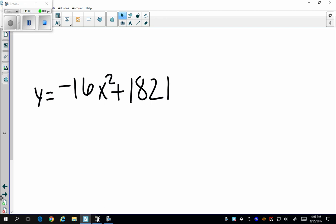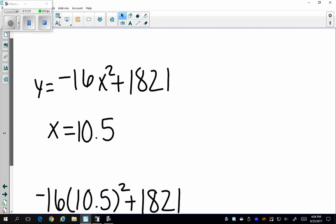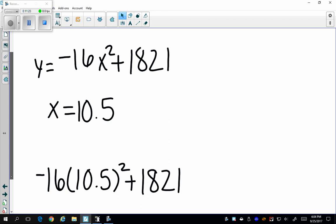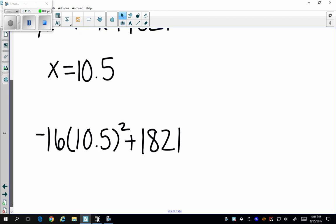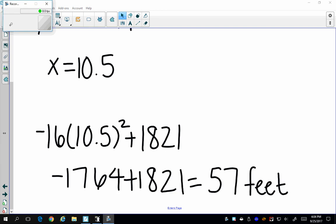So now I'm concerned with where my time at 10.5, where is this penny? How tall is it? So all I'm going to do is take my equation from my calculator and plug in 10.5 for x. So I get negative 16 times 10.5 squared plus 1821. So plugging this in, I get negative 16 times 10.5 squared is 1764 plus 821 equals 57 feet. And that is my final answer for this problem.